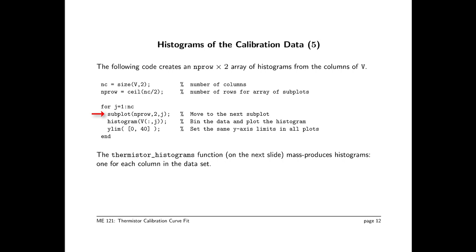And the last row, ylim 0 comma 40, says we want to make sure all the y-axis limits are the same. That allows us to make comparison. Now for your data, you will probably need to adjust the value of 40 to something other, depending on how many data you've measured. You'll see whether the scale on the y-axis is not appropriate for your data.